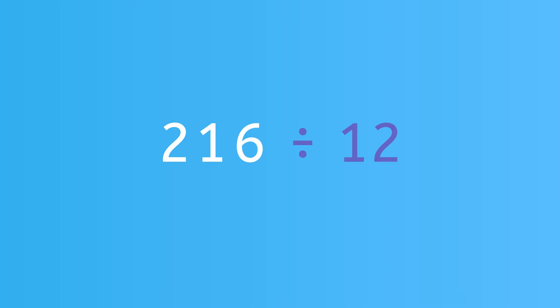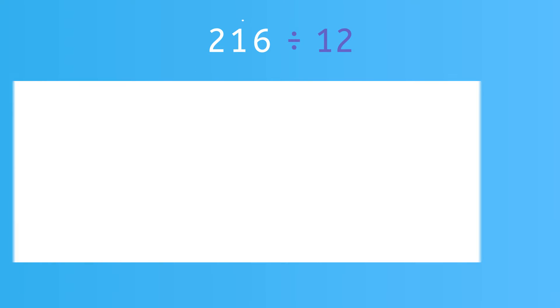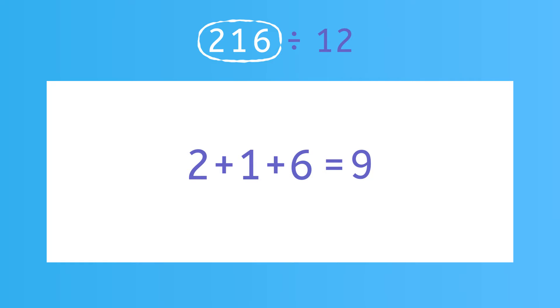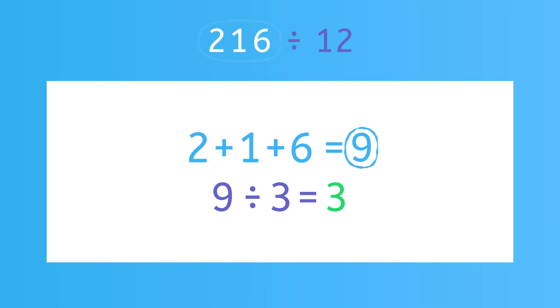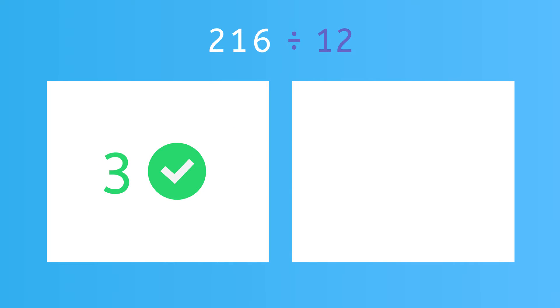First, we have 216. 2 plus 1 plus 6 is 9, which is divisible by 3. And the last two digits are 16, and 16 is a multiple of 4. So we know that 216 is divisible by 12.